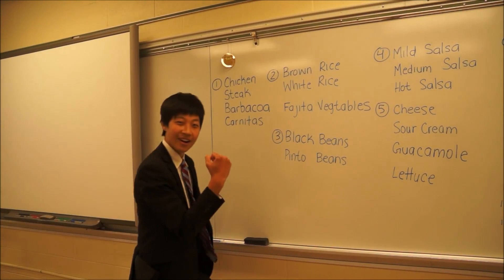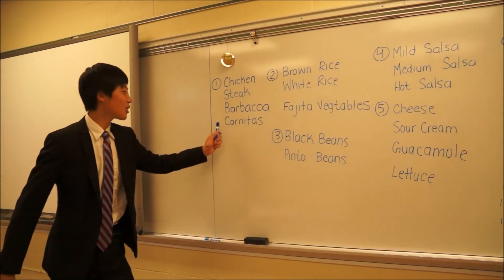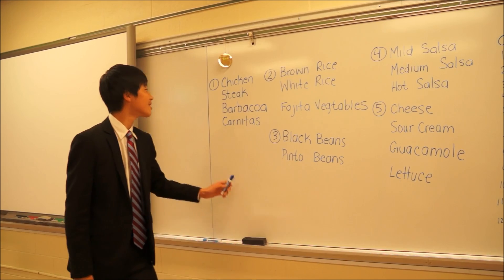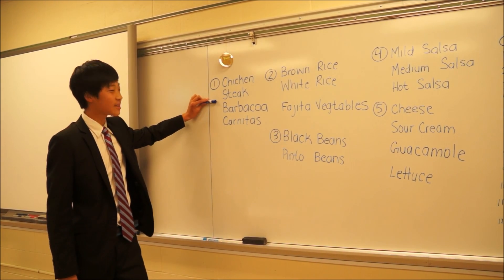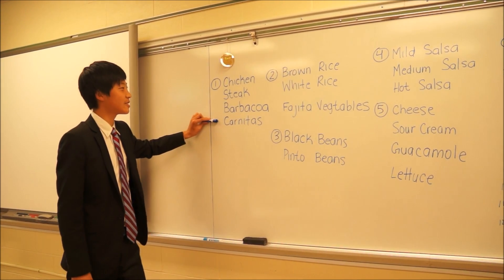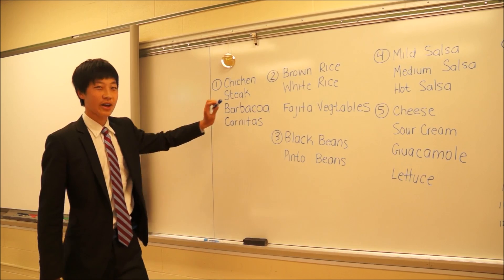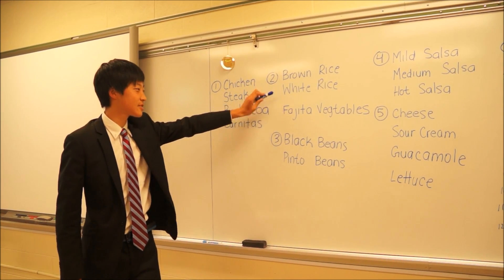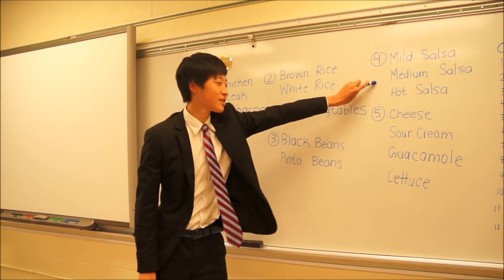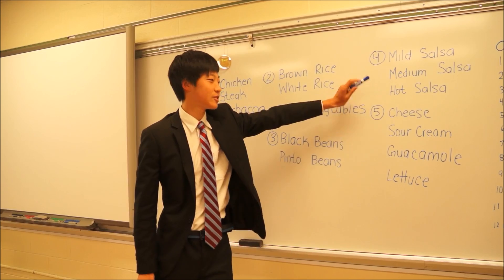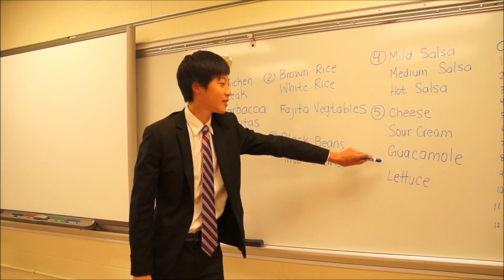Tabasco Genie! Hi, I'm Tabasco Genie. Let me tell you how many combinations are possible in Chipotle. Alright, we have so many ingredients in Chipotle. For meat, we can have chicken, steak, barbacoa, and carnitas. And we can have these kinds of rices, vegetables, beans, salsas, and we can have cheese, sour cream, guacamole, and lettuce.